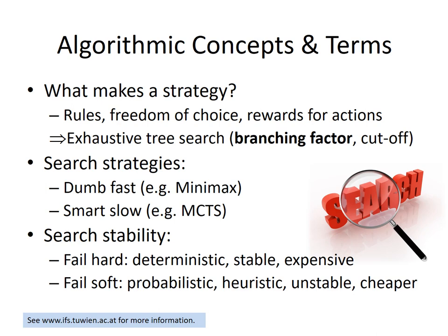If you have a game with a large branching factor, you need more computational power and/or more intelligence in your algorithm to solve it to a satisfactory degree. If the branching factor is low, there is a slight chance you can manage it by simply using good hardware. The two fundamental search strategies are: going down the tree and exploring as much as possible — that is called dumb-fast search, one example being the minimax algorithm — which is one of the major educational goals.